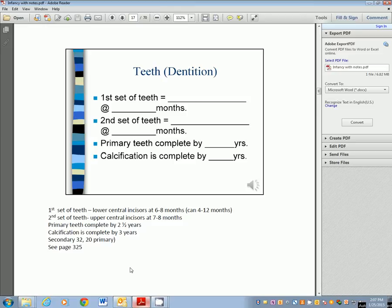Dentition or teeth. The first set of teeth to erupt are the lower central incisors, and when do you get these? Six to eight months. It can be anywhere between four to twelve, but the average is six to eight months. The second set, the upper central incisors, are usually between seven and eight months. The primary teeth are usually completed by two and a half years. Calcification is complete by three. When you finish, you have 32 secondary teeth and 20 primary. So you have 20 baby teeth, and when you finish in adulthood, you end up with 32. Page 325 in your book shows you an excellent picture of the sequence of eruption of your primary teeth.